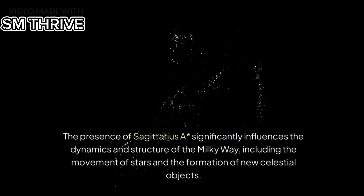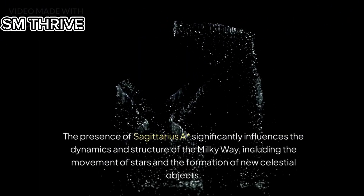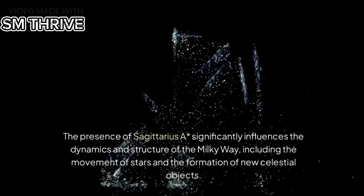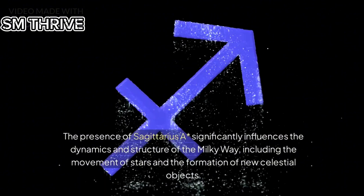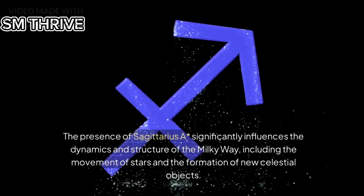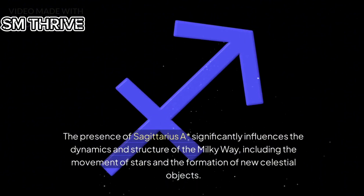The presence of Sagittarius A* significantly influences the dynamics and structure of the Milky Way, including the movement of stars and the formation of new celestial objects.